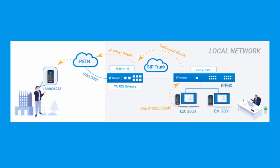Then you can make a test call from the P-Series PBX extension. In this example, when you dial 91588-035242 from Extension 2000, it will call your mobile phone number 1588-035242.